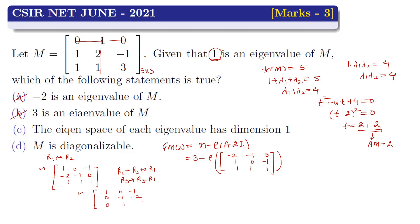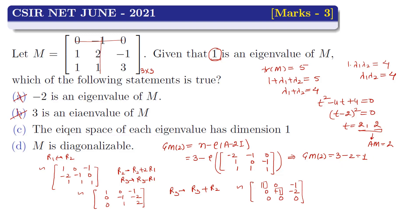After row reduction, we apply R3 → R3 + R2 and obtain a row of zeros, giving us the equivalent matrix with 2 non-zero rows. So rank(A - 2I) = 2, and geometric multiplicity of eigenvalue 2 = 3 - 2 = 1. But algebraic multiplicity is 2 and geometric multiplicity is 1, so M is NOT diagonalizable — the condition AM = GM for every eigenvalue is not satisfied. Therefore option D is wrong. For eigenvalue 1 (distinct), its eigenspace has dimension 1, and for eigenvalue 2, geometric multiplicity is also 1, so option C is correct.